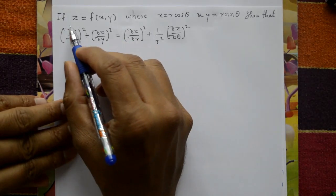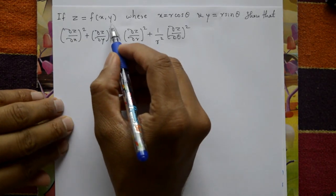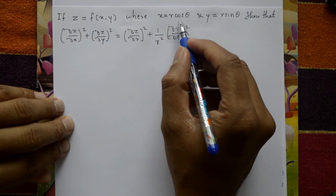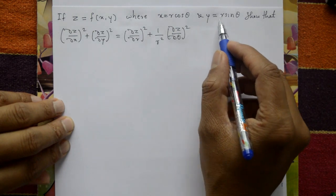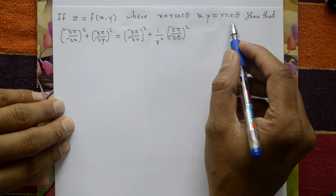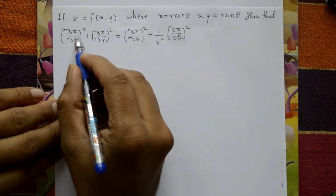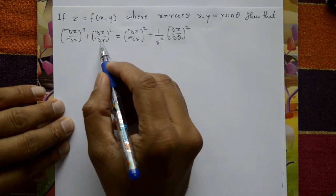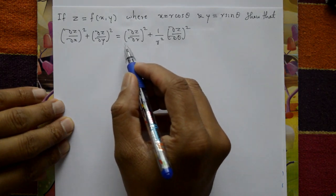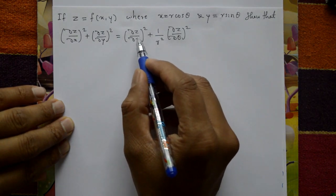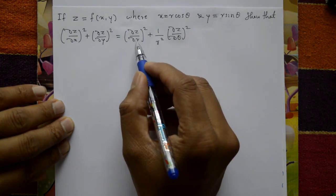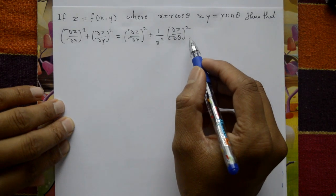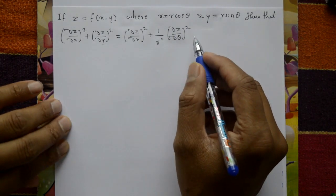If Z is equal to f of xy, where x is given r cos theta and y is equal to r sin theta, show that dou z by dou x whole square plus dou z by dou y whole square is equal to dou z by dou r whole square plus 1 by r square into dou z by dou theta whole square.